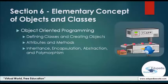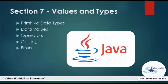From the sixth section we start object-oriented programming. The sixth section covers elementary concepts about objects and classes — how to define a class using attributes and methods, how to create objects using that class, and finally the four principles of object orientation: inheritance, encapsulation, abstraction, and polymorphism.